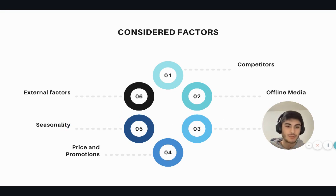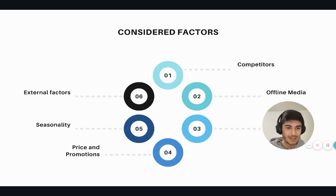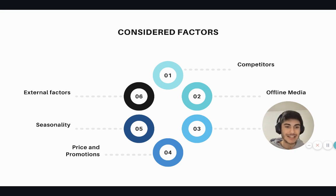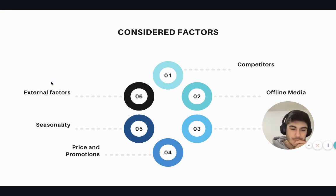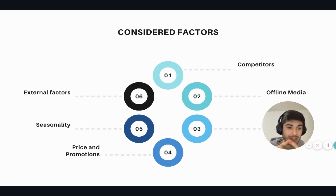Then we have seasonality, which in e-commerce and direct-to-consumer businesses has a really huge impact. We can measure it — for example, what's the impact of seasonality in January compared to December — which is huge, and lets us forecast and plan inventory really well. And then there are external factors such as COVID case data, oil prices, or monetary exchange rates.